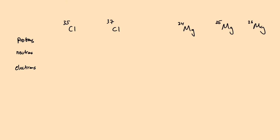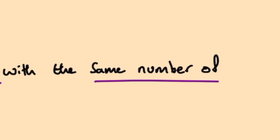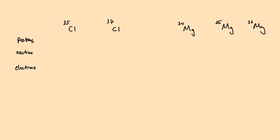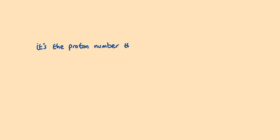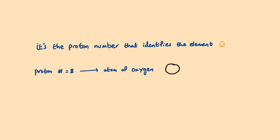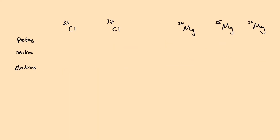Coming to the second part of the definition, isotopes have to have the same number of protons. This is because these two chlorine atoms are both of the element chlorine, and it's the proton number that identifies the element. For example, if I give you an atom with a proton number of 8, you would say you have an atom of oxygen, because it's the proton number that identifies the element. Given that these are two chlorine atoms, they have to have the same number of protons, which is 17 for both isotopes.